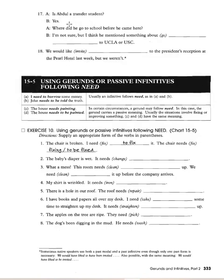'I think he mentioned something about going to UCLA or USC.' 'We would like to have been invited to the President's reception at the Pearl Hotel last week, but we weren't.' So that's the past passive infinitive — expressing something you wished had happened in the past.